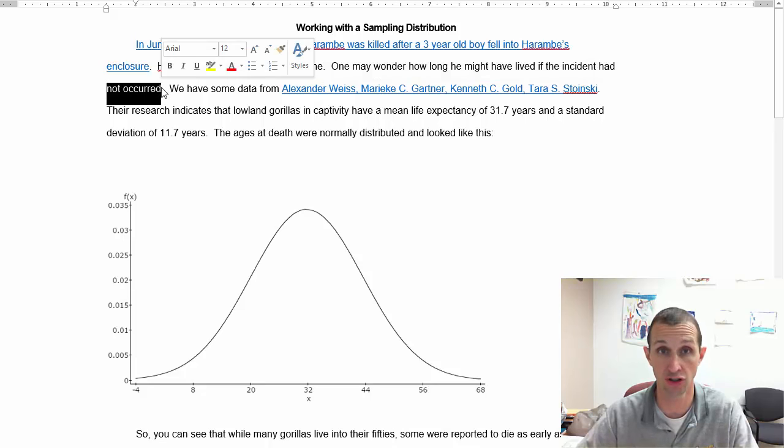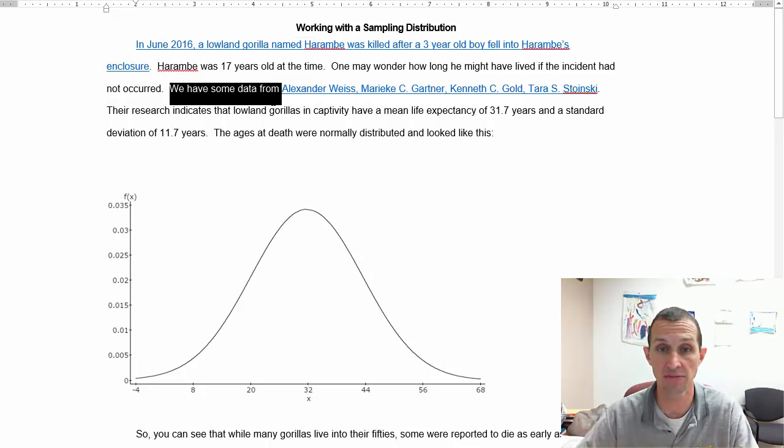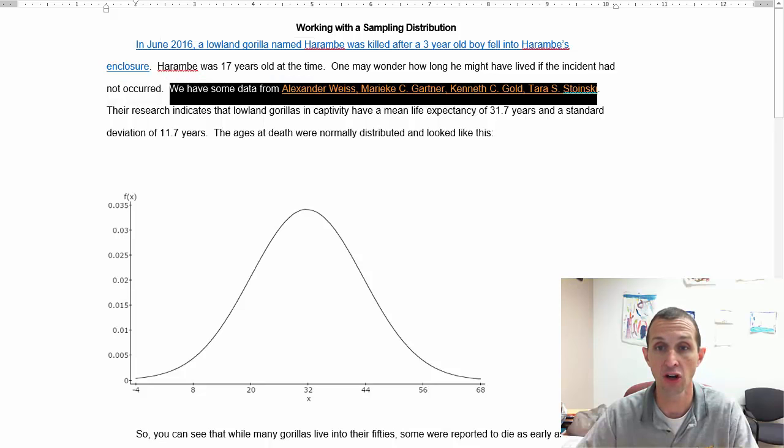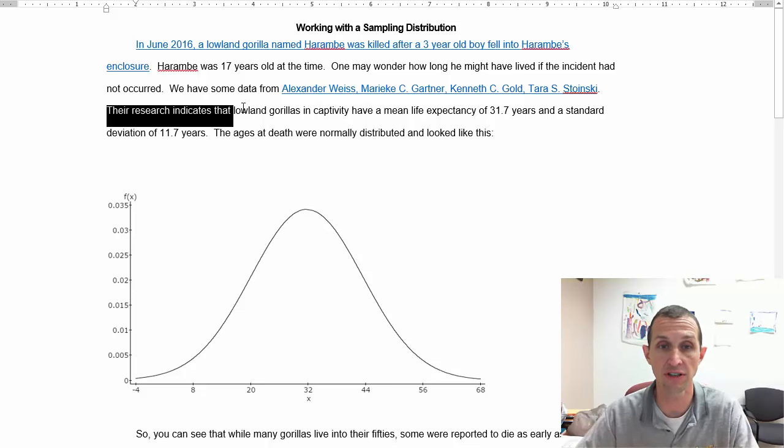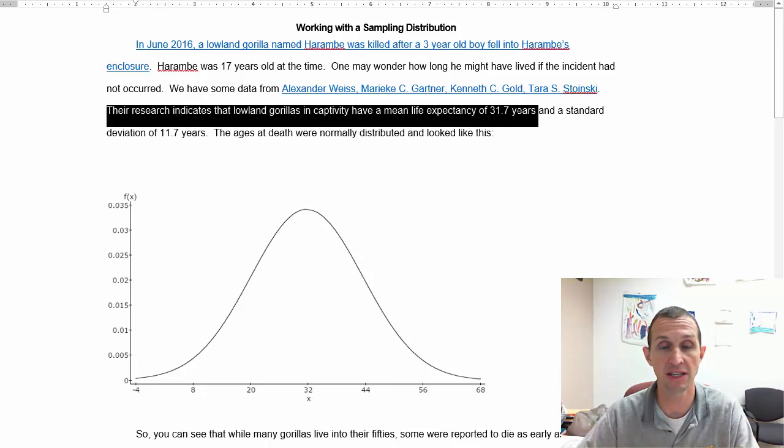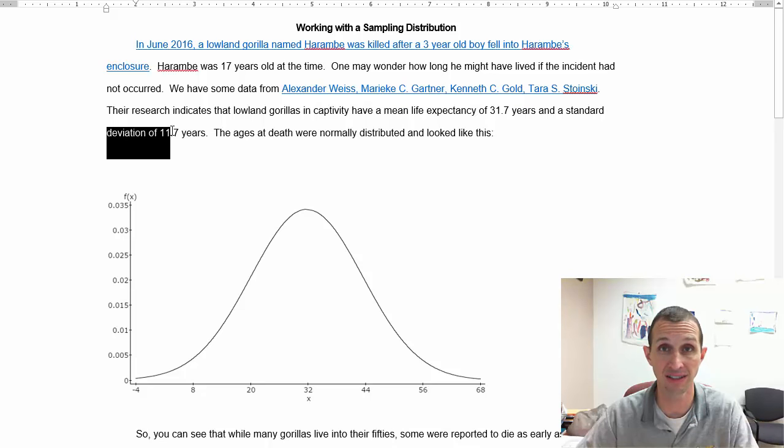We actually have some data from Weiss, Gartner, Gold and Stonski. If I misspelled your name I'm sorry but I did link to your research. Their research indicates that lowland gorillas in captivity have a mean life expectancy of about 31.7 years and a standard deviation of 11.7 years.